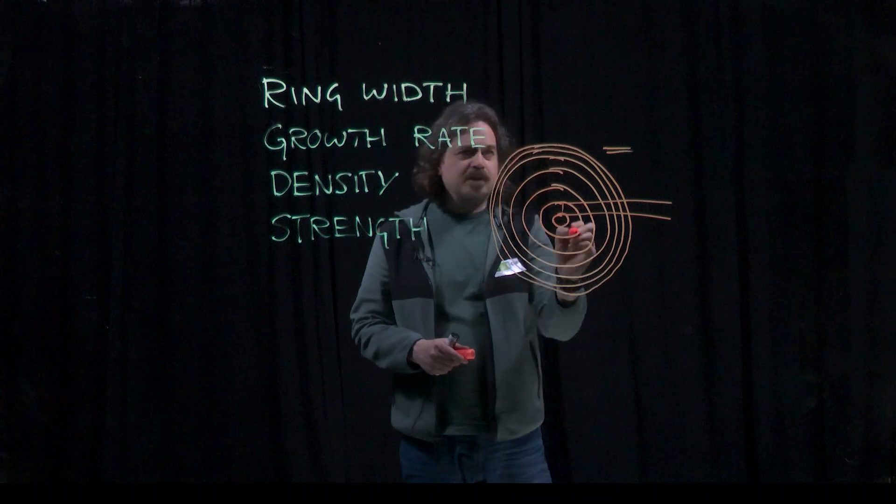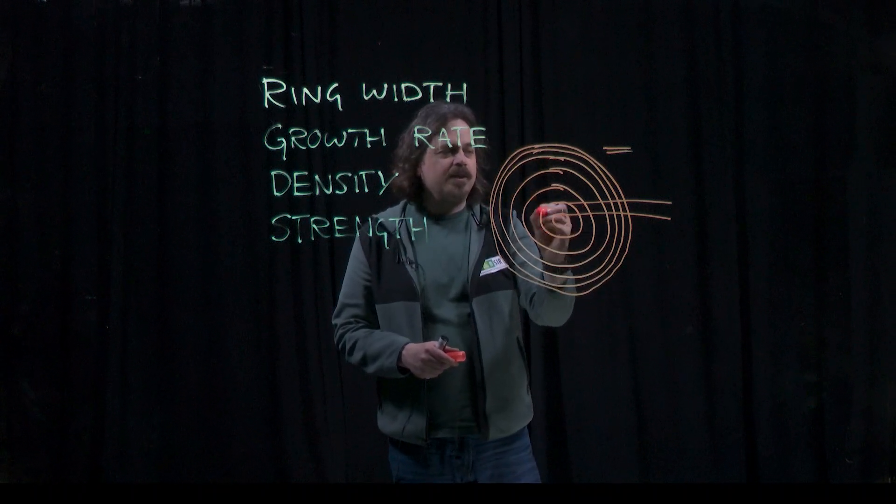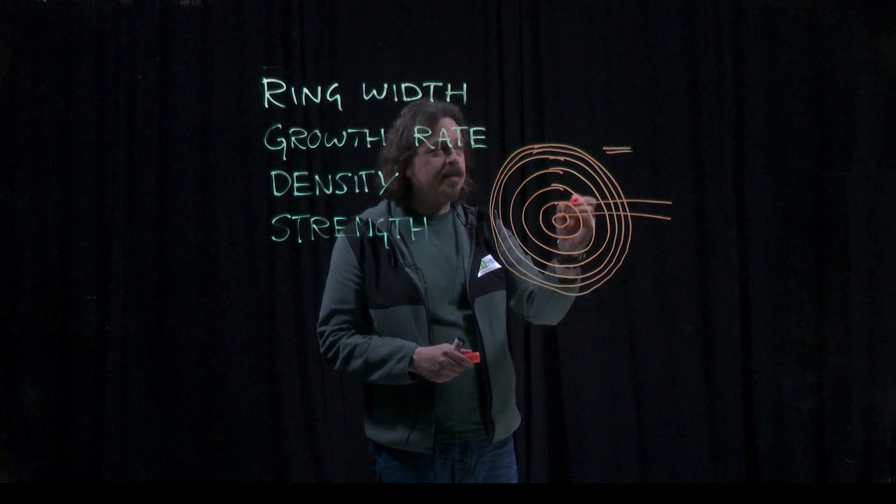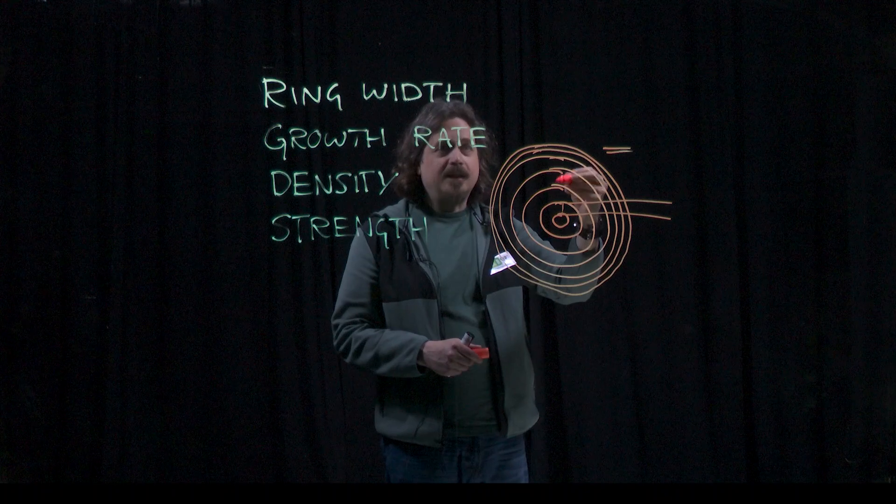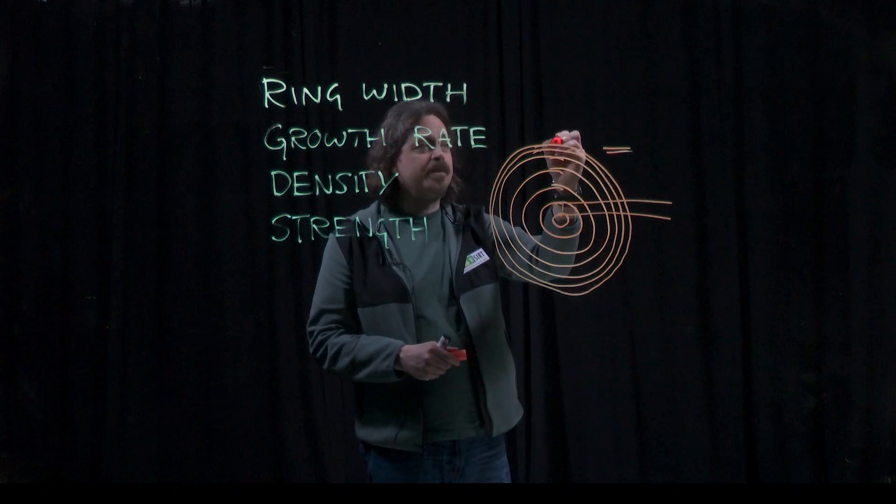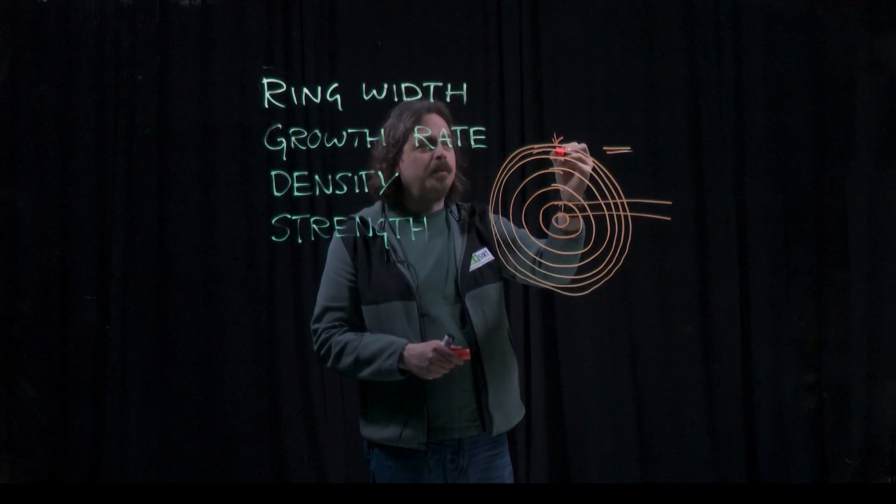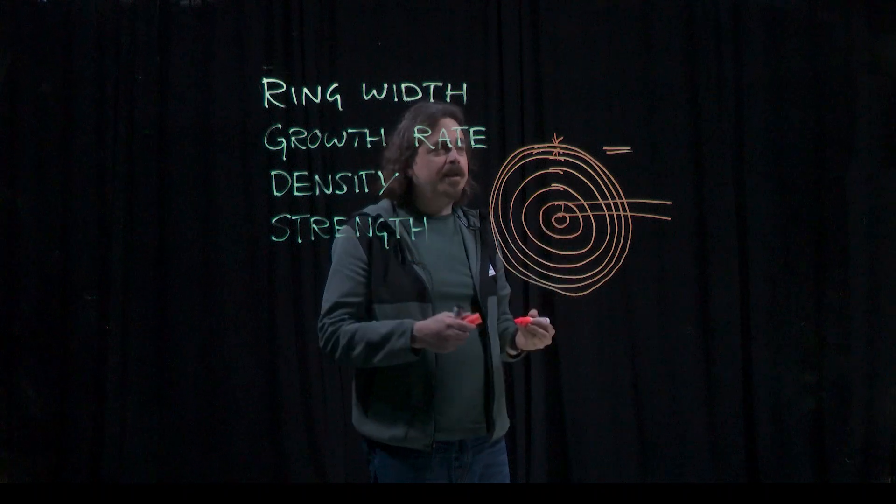But here the diameter of the ring is small so here the tree is actually growing slower than it is here because this is a big diameter ring and the tree has got taller. So this small width ring represents actually quite a lot of new growth.